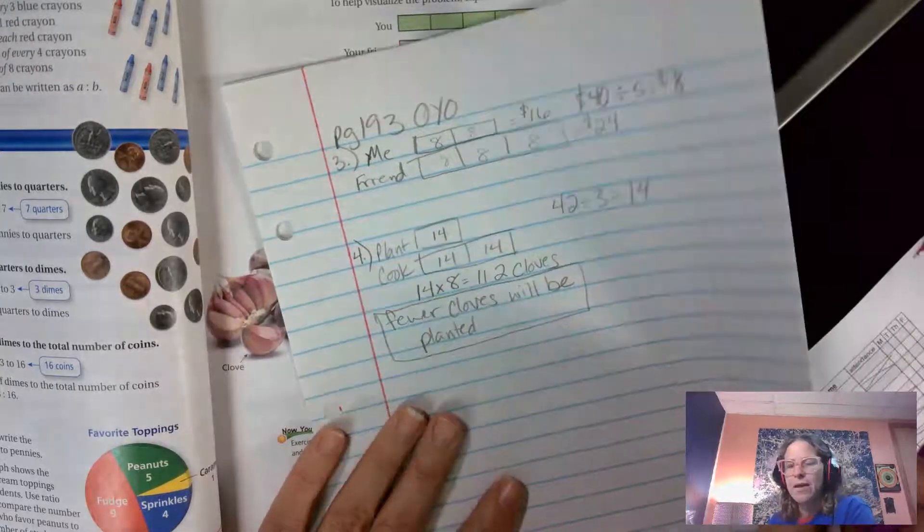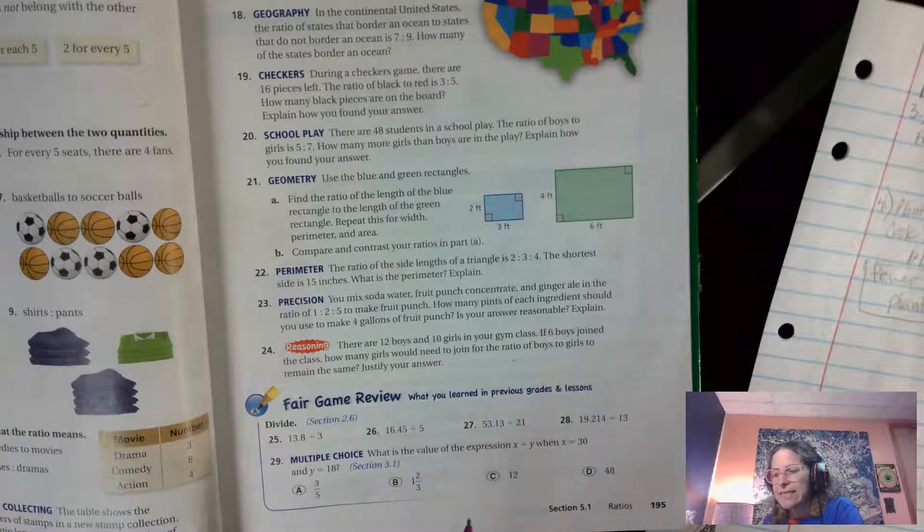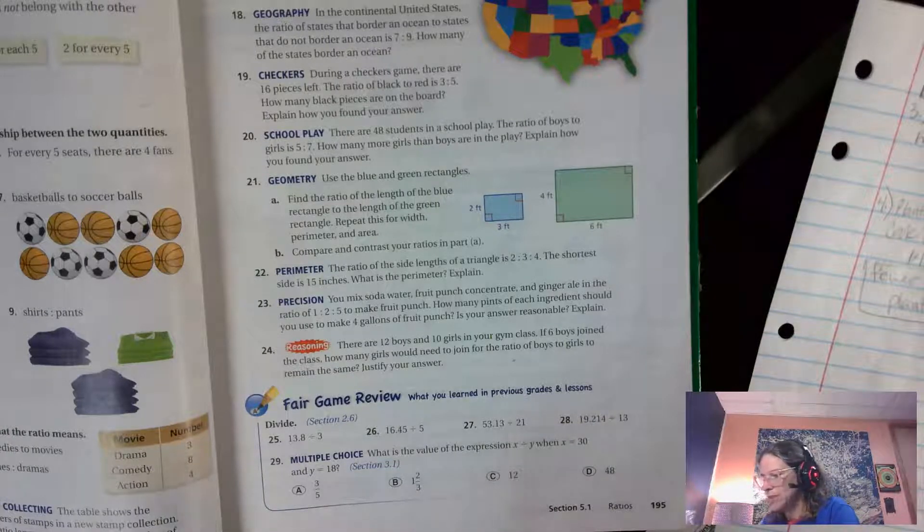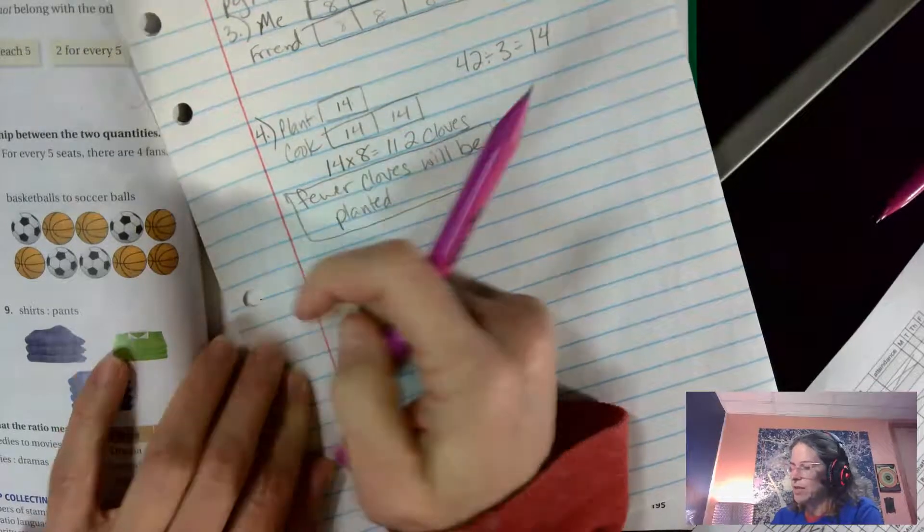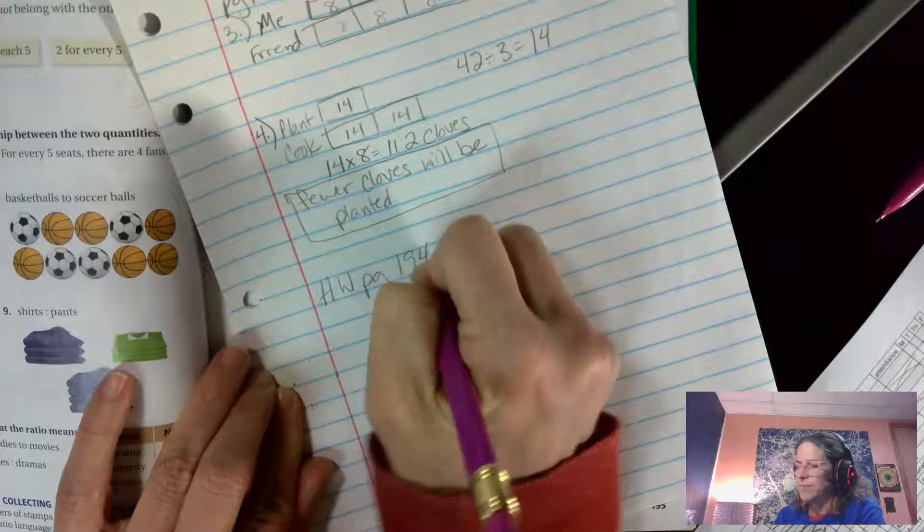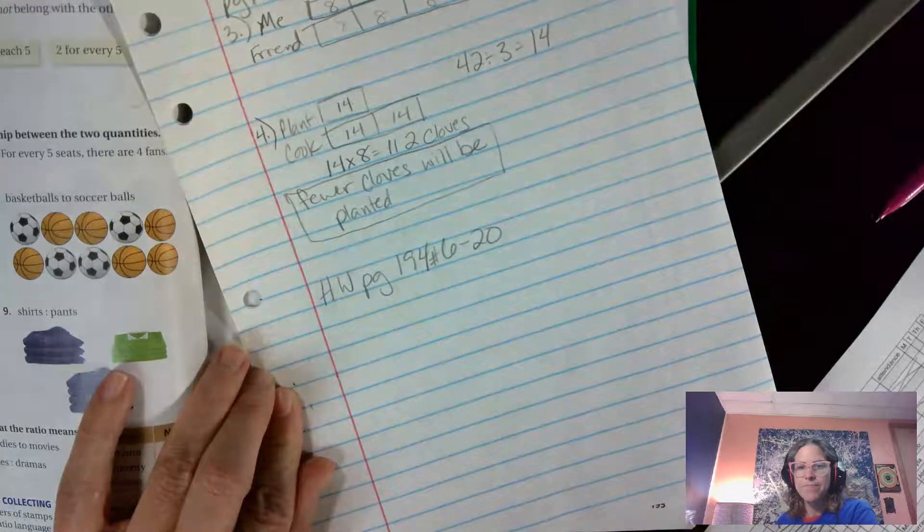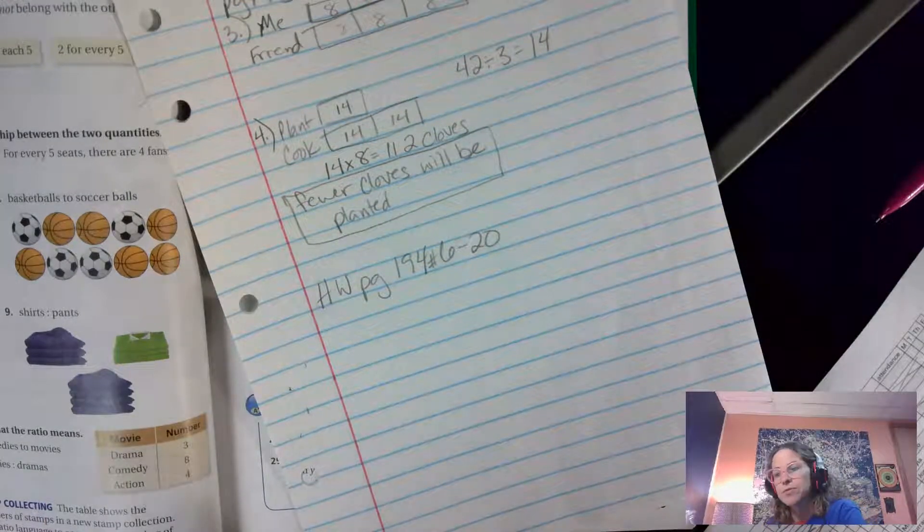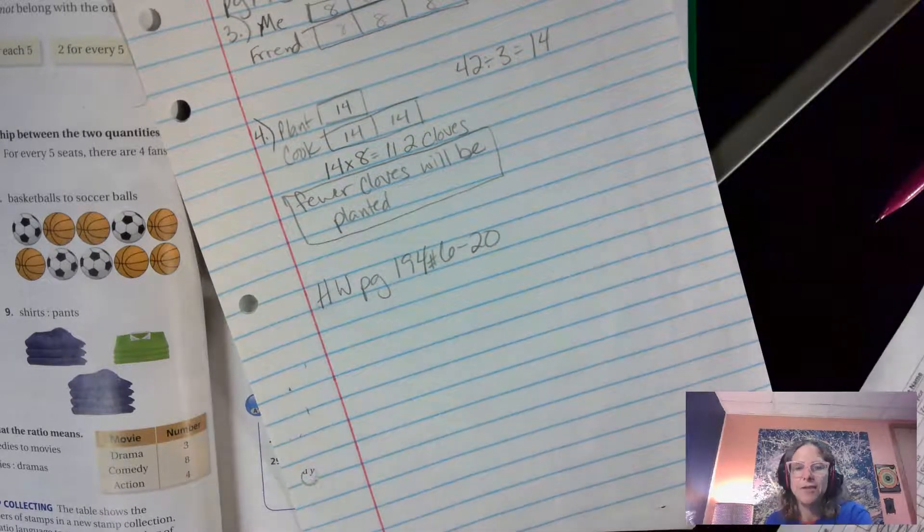Okay, now your homework tonight is page 194 and 195. I want you to do six through 20, complete six through 20. Homework page 194, six through 20. I want you to do all of them. Okay, and then Wednesday morning I will post a video that goes over all the answers so you make sure that you're right. Let me know if you have questions. Don't be afraid to ask Ms. Decker.